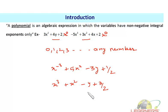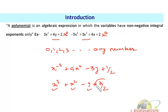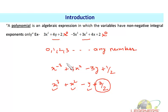Let's have one more example: x³ + x² − y + 3/2. Is this a polynomial? Yes, it is, because all variables have non-negative integral exponents. It doesn't matter if a constant is a fraction or even an irrational number — what matters is that the variables carry non-negative integral exponents. I hope you are clear.